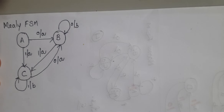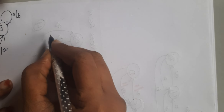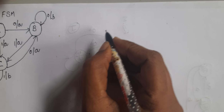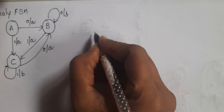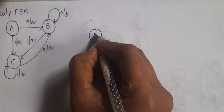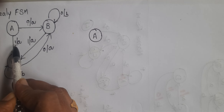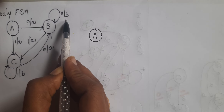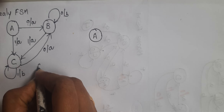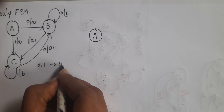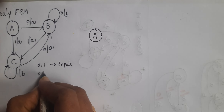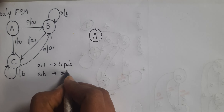Now we want to convert this Mealy FSM into a Moore model. Here 0 and 1 are the inputs, and a and b are the outputs.